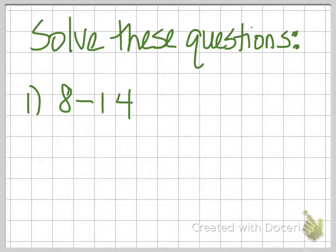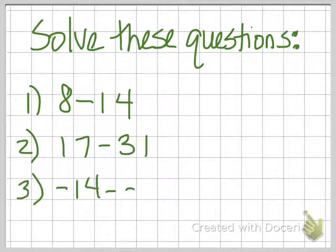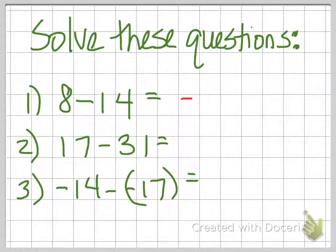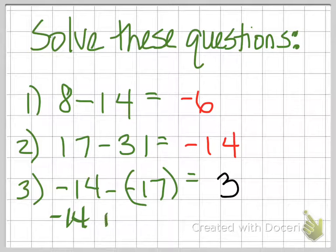Solve these questions. Draw a number line to help you. Pause and check your answers in a moment. 8 minus 14 equals negative 6. 17 minus 31 equals negative 14. And negative 14 minus negative 17 equals a positive 3. That's because this is rewritten as negative 14 plus 17, because we have two negatives side by side, and they cancel each other out.